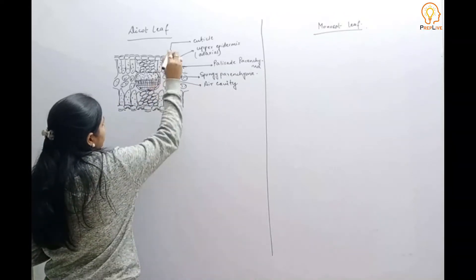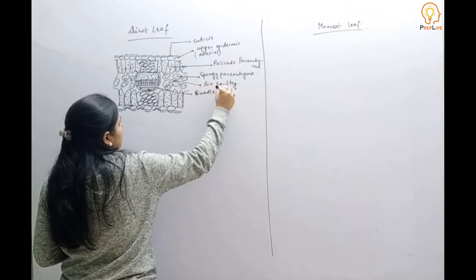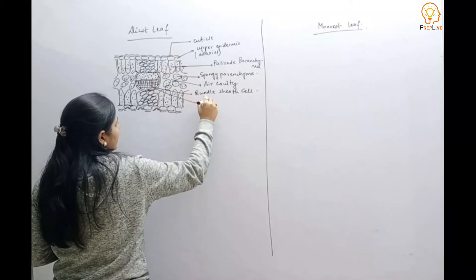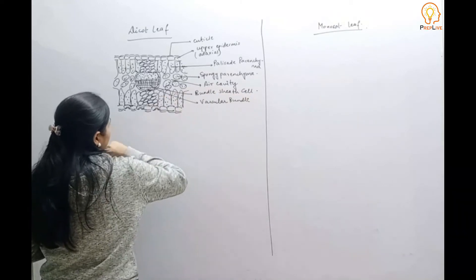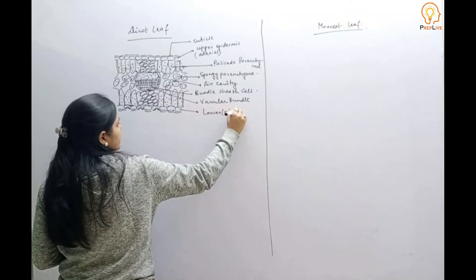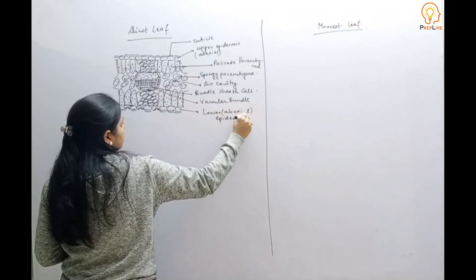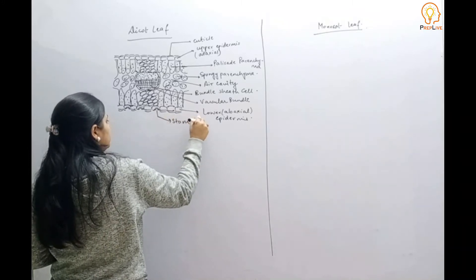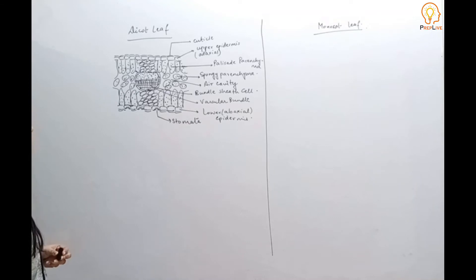The outer layer surrounding the vascular tissue is the bundle sheath cell. Inside it is the vascular bundle. Below that is the lower epidermis, also called the abaxial epidermis. Stomata are present in this lower epidermis. This is the overall pattern of arrangement in the dicot leaf.